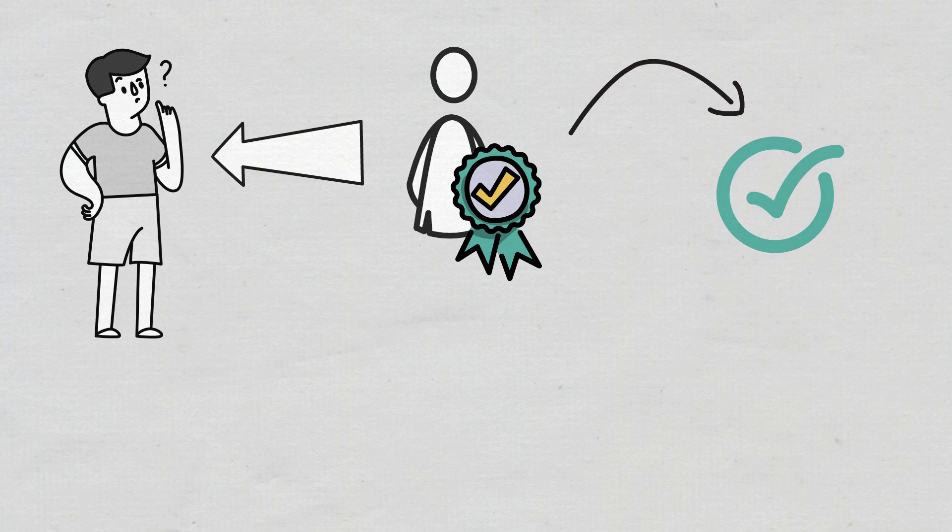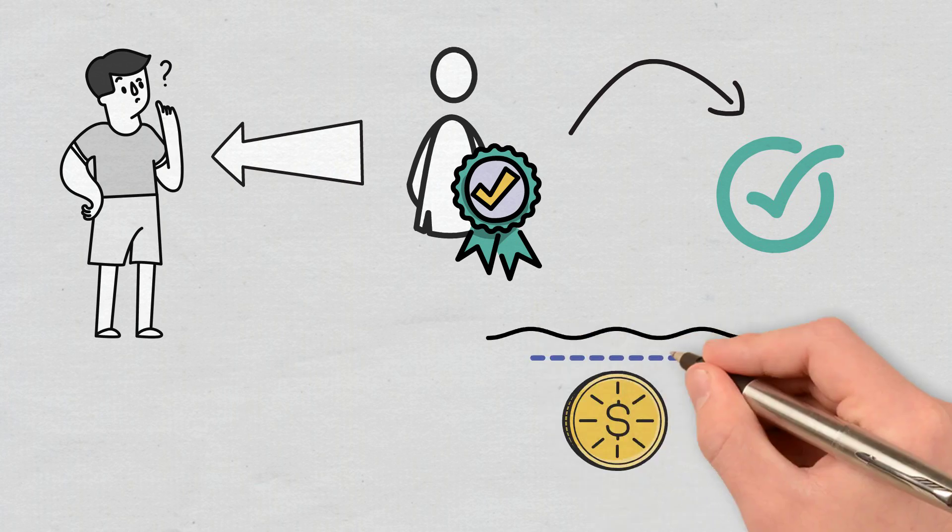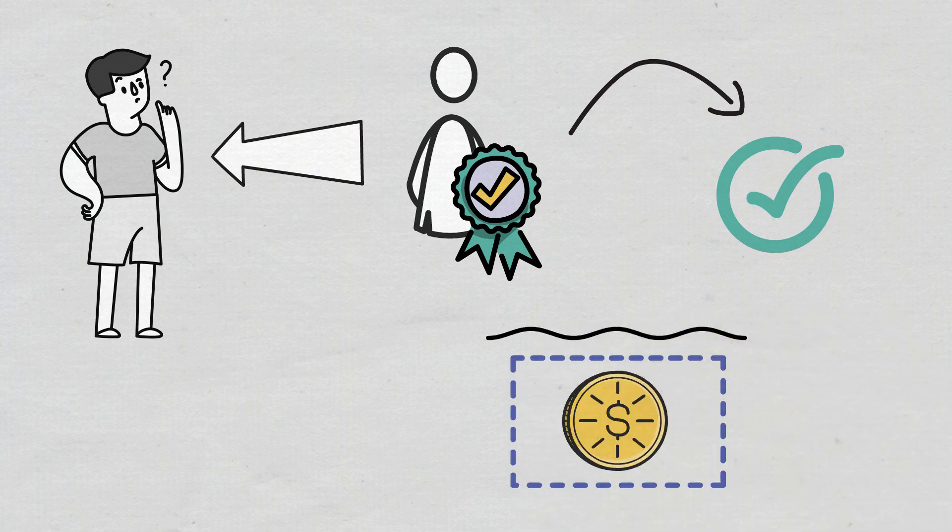Once a cryptocurrency is staked, it becomes part of that process and can no longer be used or traded until it is removed from that pool. At the moment, some famous options are Cardano, Polkadot, Solana from the top three, and others would be Avalanche, Tron, EOS, Algorand, Tezos.